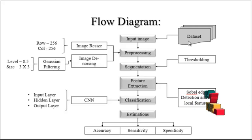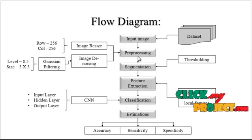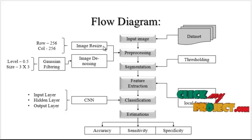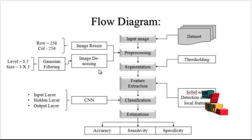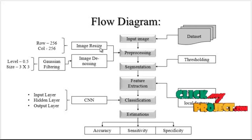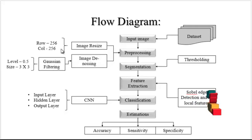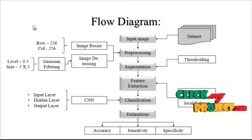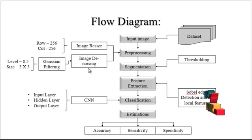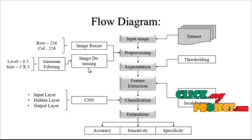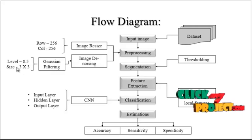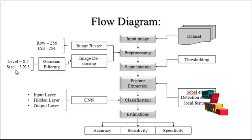After getting an image from the input, we move on to the second stage: pre-processing. In this pre-processing step, we have two kinds of pre-processing. One is image resizing and the other is image dimension adjustment. In the image resize step, we resize the image to 256x256 — 256 rows and 256 columns — regardless of the original input dimension. After resizing, we remove noise from the image using the Gaussian filter, which has a level of 0.5 and a size of 3x3.